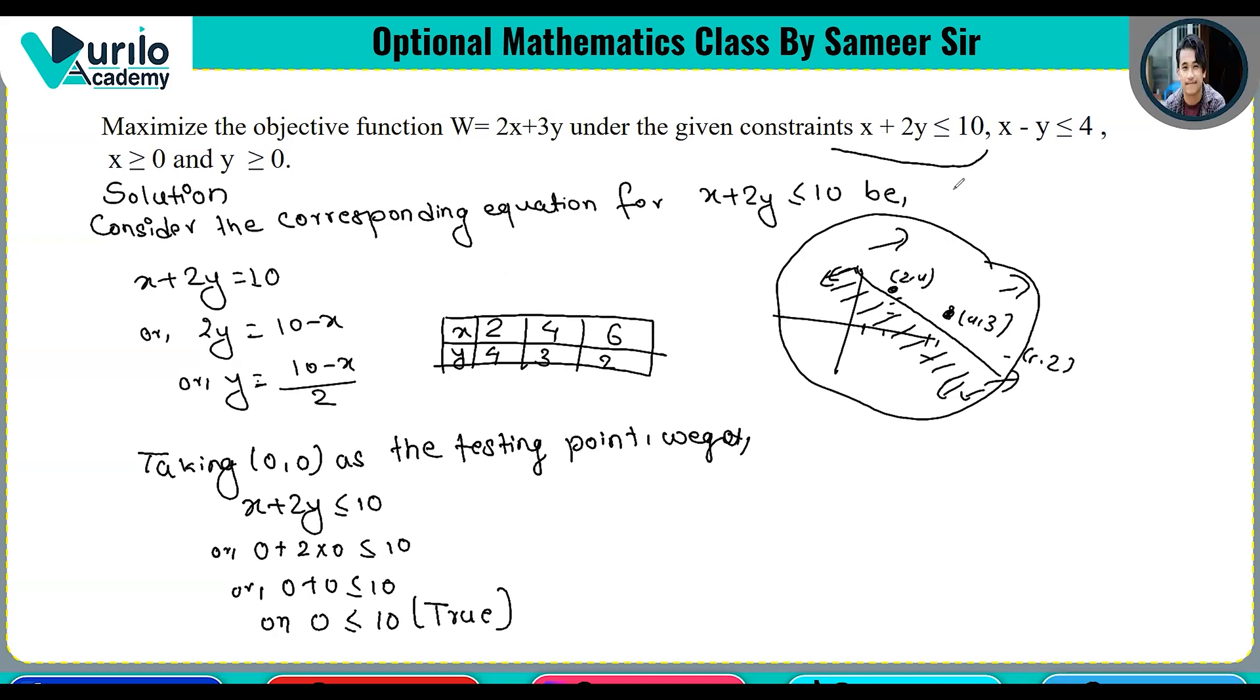Testing point (0,0): Is x plus 2y less than or equals to 10? Zero plus two times zero equals zero, and zero is less than or equals to 10. This statement is true, so the feasible region includes the origin side.